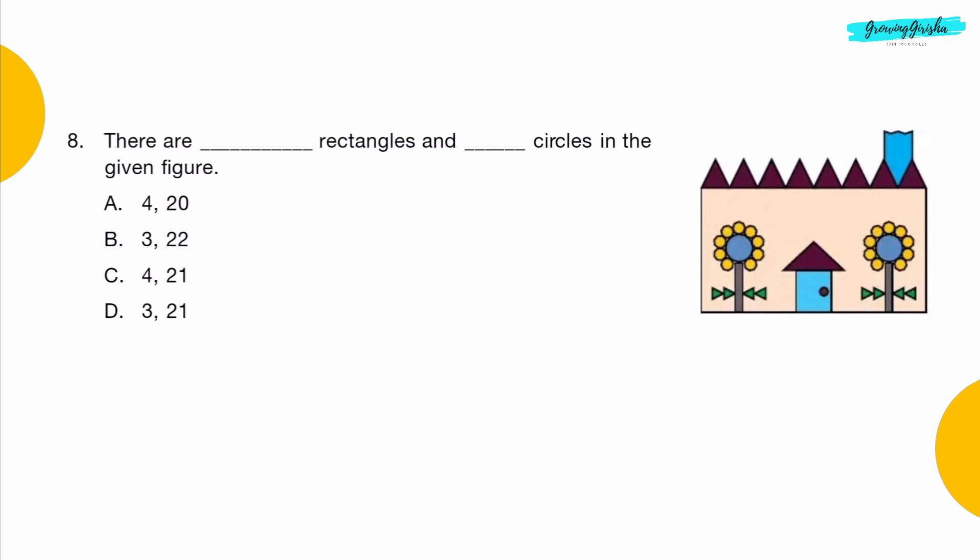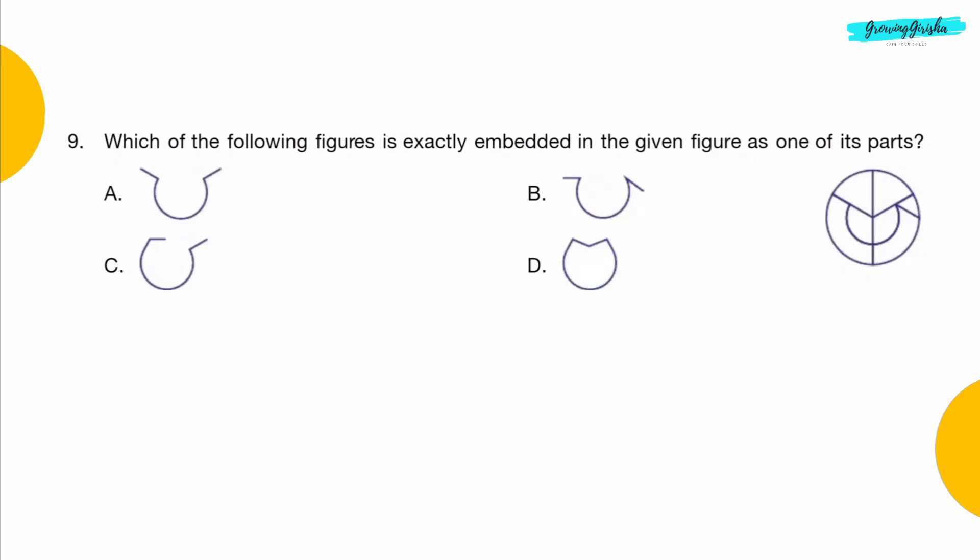Question 8: There are dashed rectangles and dashed circles in the given figure. Option C: 4 and 21.